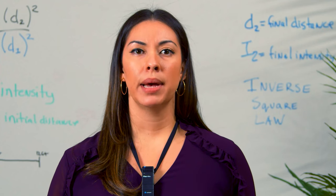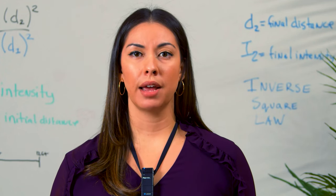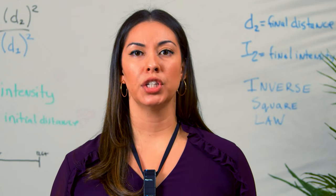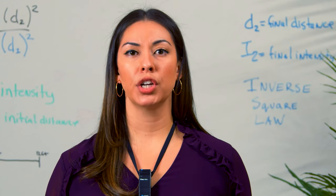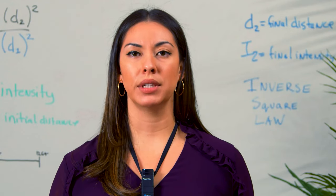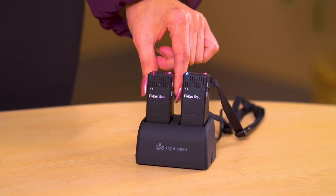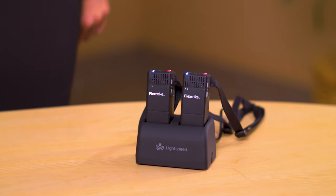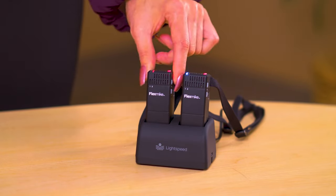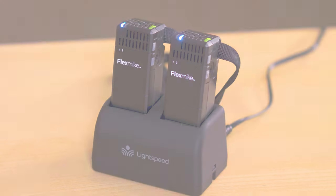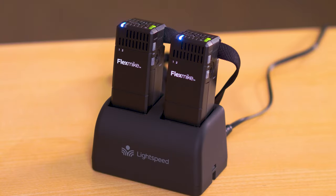The battery will last a full day up to five hours but will need to be charged each night. A full charge cycle takes five to ten hours. Place your FlexMic in the charger making sure the microphone is facing forward. You'll see that the charging indicator light will turn red. In the morning when you return, your microphone will be fully charged and the charging light will be green.